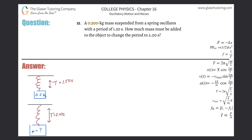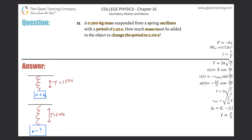Number 15: a 0.5 kilogram mass suspended from a spring oscillates with a period of 1.5 seconds. How much mass must be added to the object to change the period to two seconds? So here we have one case — they tell us that the mass is 0.5 kilograms attached to this spring, and they tell us the period is 1.5 seconds.